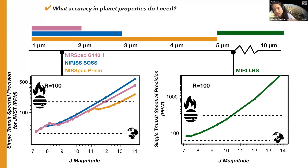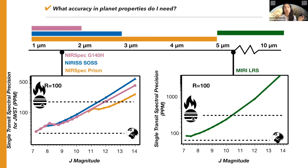Dr. Sharon Wang made me realize earlier this week that several of you are going to be wondering what happens on the lower end of this magnitude scale — basically how bright you can go before your JWST mode saturates. I'll have a quick slide later on to show how you can check if your target has saturated any of these modes.